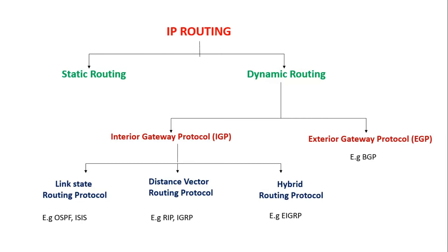Dynamic routing is divided into two types: Interior Gateway Protocol (IGP) and Exterior Gateway Protocol (EGP). IGP is a protocol used to share routing information or routing updates with other routers within the same autonomous system or same organization. EGP is used to share routing updates between different organizations or two different autonomous systems. The best example of an exterior gateway routing protocol is BGP, Border Gateway Protocol, used to share routing updates between two different autonomous systems or organizations.